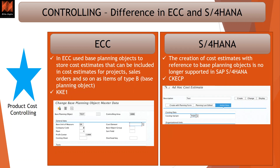Another change is in the product cost controlling area. In ECC, we used to have base planning objects to store cost estimates that could be included in cost estimates for projects and sales orders, using transaction KKE1. However, in S4HANA, creation of cost estimates with reference to a planning object is no longer supported, and you have to use an ad hoc cost estimate, which is transaction CKECP. That is another major change driven from ECC to S4HANA.